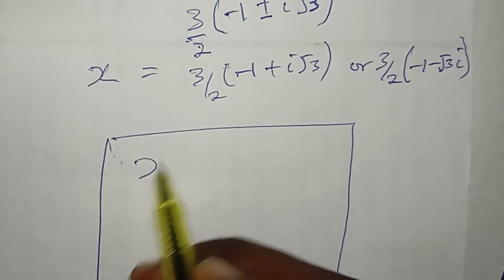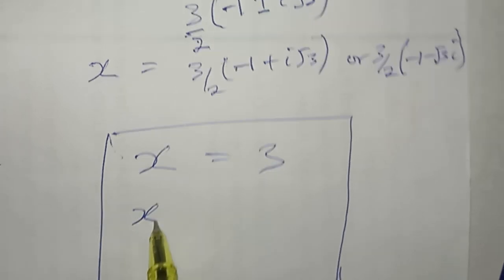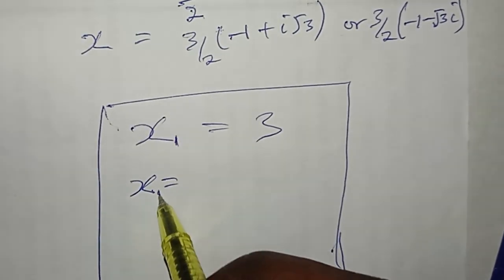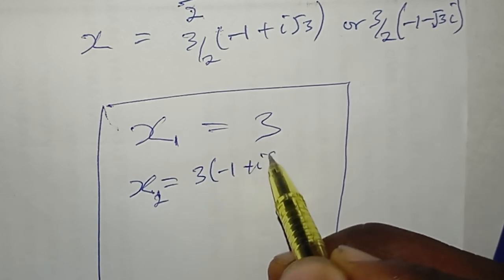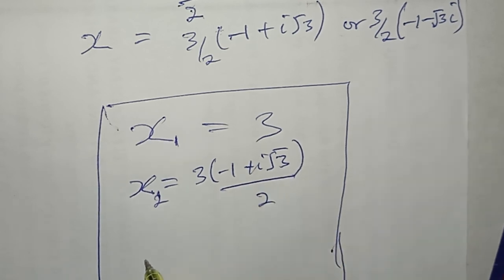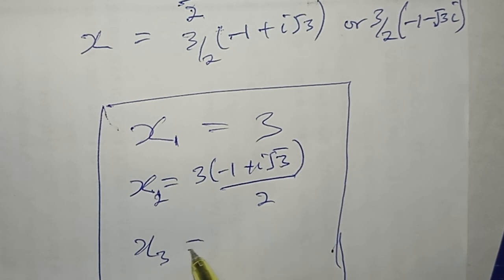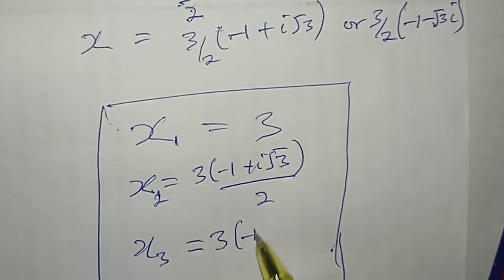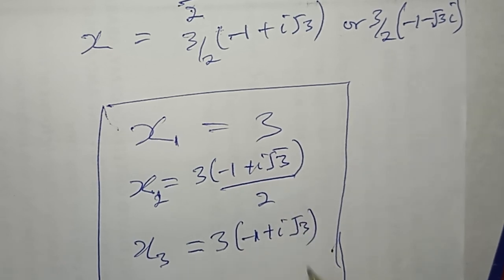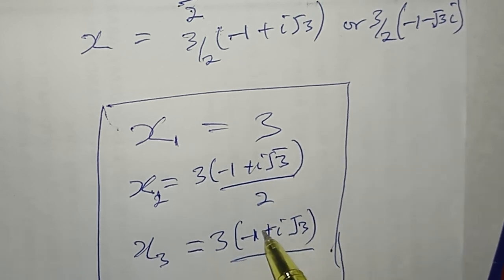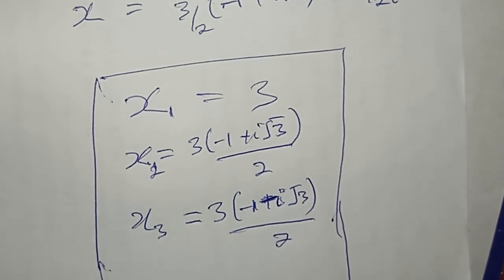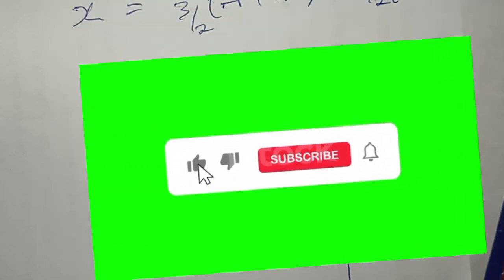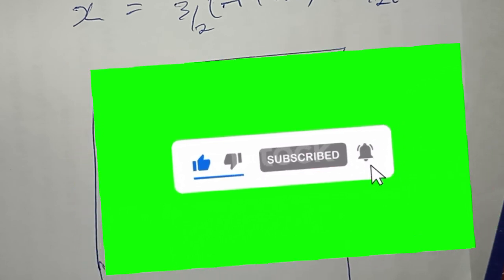So putting all the values of x together: x₁ = 3, x₂ = (3/2)(−1 + i√3), and x₃ = (3/2)(−1 − i√3). These are the three values of x that satisfy the equation x³ = 27. If you've understood this, leave a thought in the comment section, like this video, and subscribe to our channel for more updates. See you in the next video, bye!